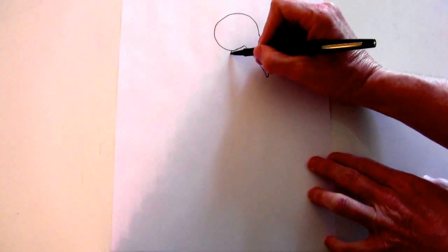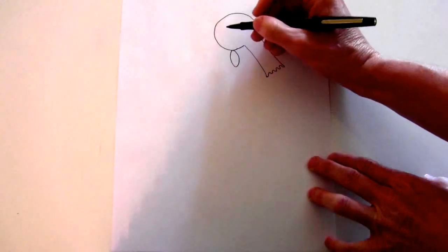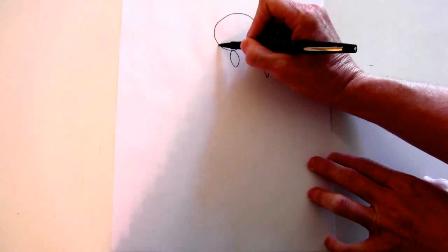Right here, there's an oval shape. And right next to it is the beak.